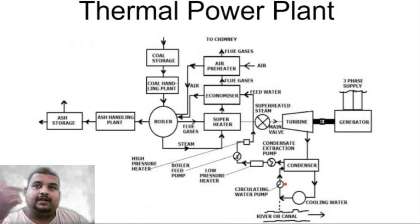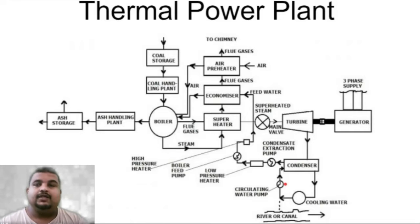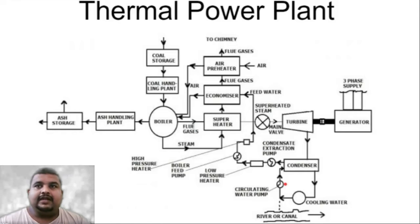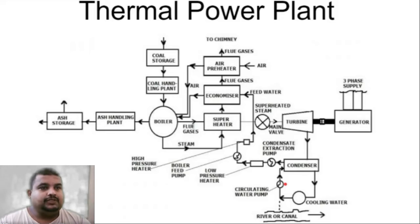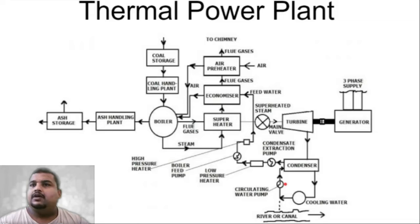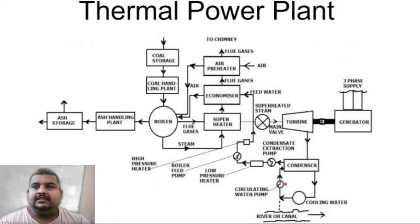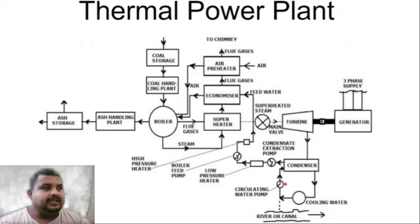So the turbine ultimately converts the rotational energy from the high pressure steam given to it. After giving its energy to the turbine, that high pressure steam becomes low pressure steam — the pressure of the steam drops considerably. That low pressure steam is then given to the condenser.